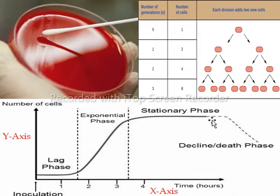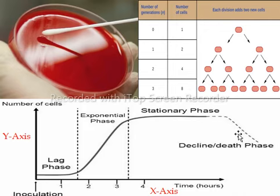Finally, we have the decline or death phase. This is due to excess accumulation of waste products or exposure to oxygen by bacterial cells, causing bacterial numbers to decrease. That's all about the growth of bacteria.